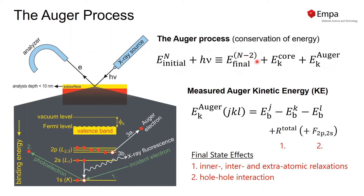And we are left with the final system with two core holes, so an N minus two state. We see that the Auger kinetic energy is again determined by final state effects. We have the relaxation term and an additional final state term due to the interaction between the two core holes in the Auger process, but we typically neglect this.